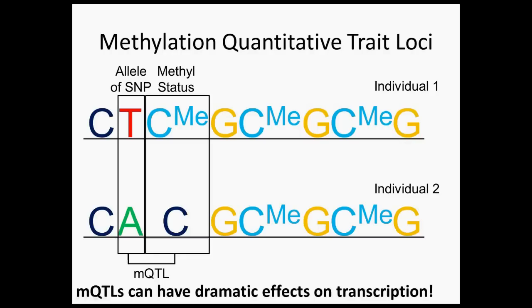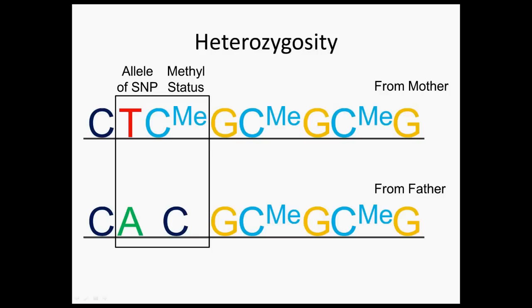I'm now going to explain the concept of methylation quantitative trait loci, which our study focuses on, and the reason we're interested in them is that they can dramatically affect transcription. We abbreviate methylation quantitative trait loci as MQTLs. MQTLs are when we have a base of DNA that is strongly correlated with whether or not a C is methylated in individuals. A base of DNA that varies across individuals is called a single nucleotide polymorphism, abbreviated as SNP, and the version of the base that an individual has is called the allele.